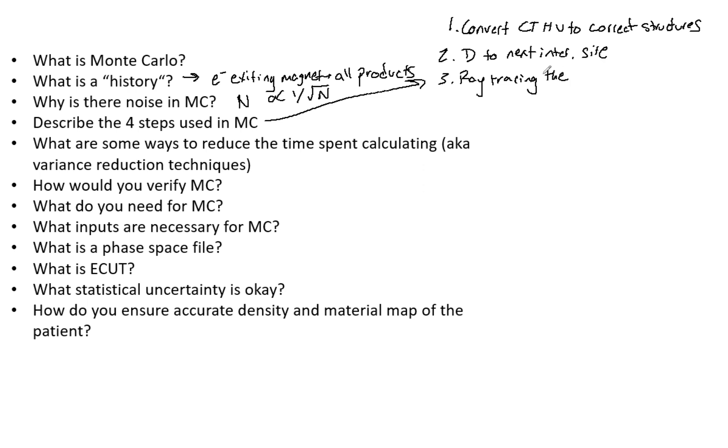Four, we want to select the interaction type at that site. Now this is probabilistic, but ultimately you do have to determine what the interaction type is. And then finally you want to actually simulate that interaction.